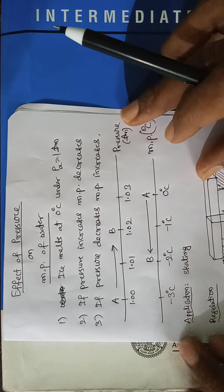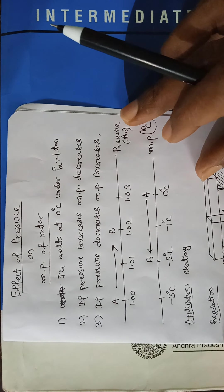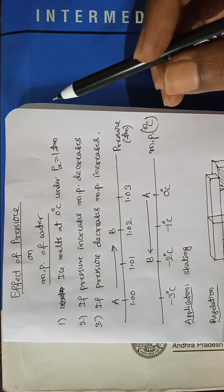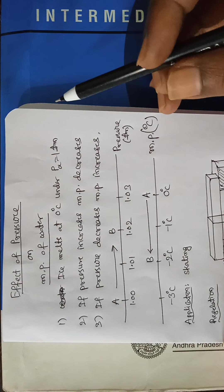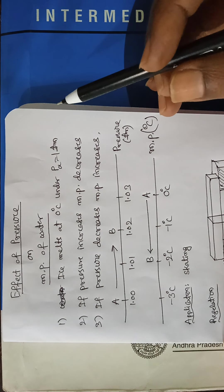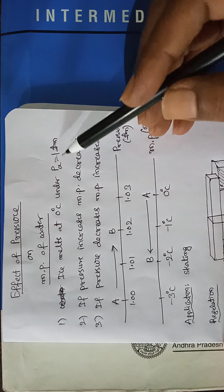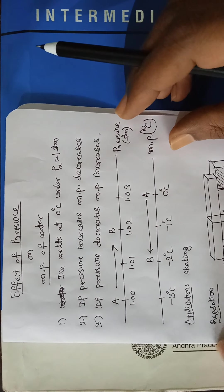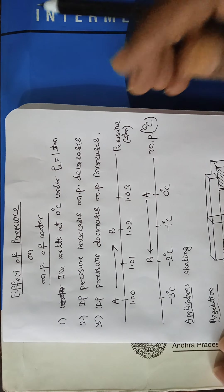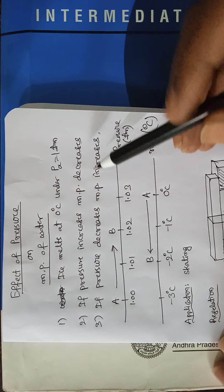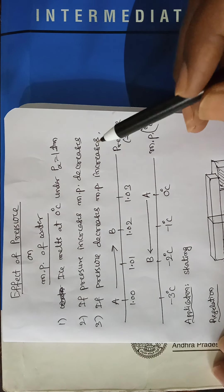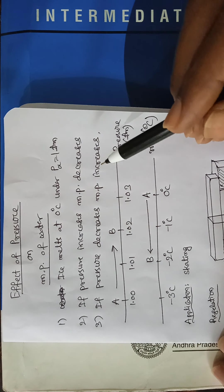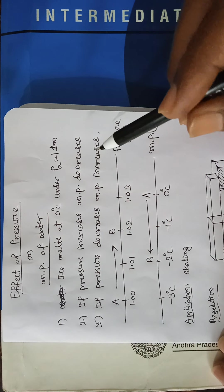Dear students, now let us consider the effect of pressure on the melting point of water. Ice melts at 0 degrees centigrade under normal atmospheric pressure. What happens if pressure is increased? This is unlike boiling point — in the case of boiling point, when pressure is increased, the boiling point also increases.